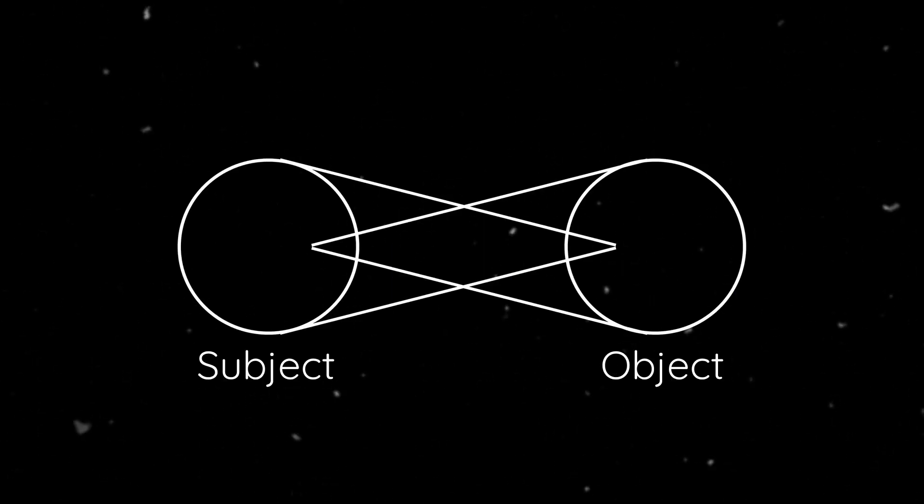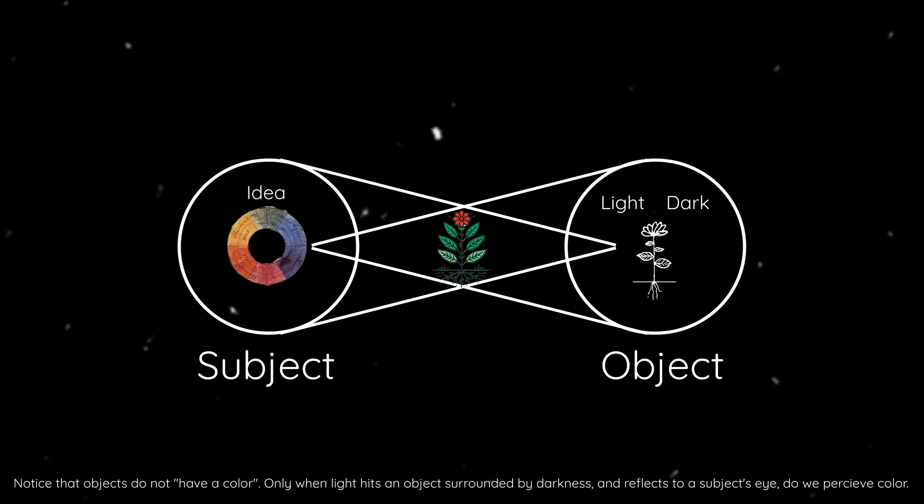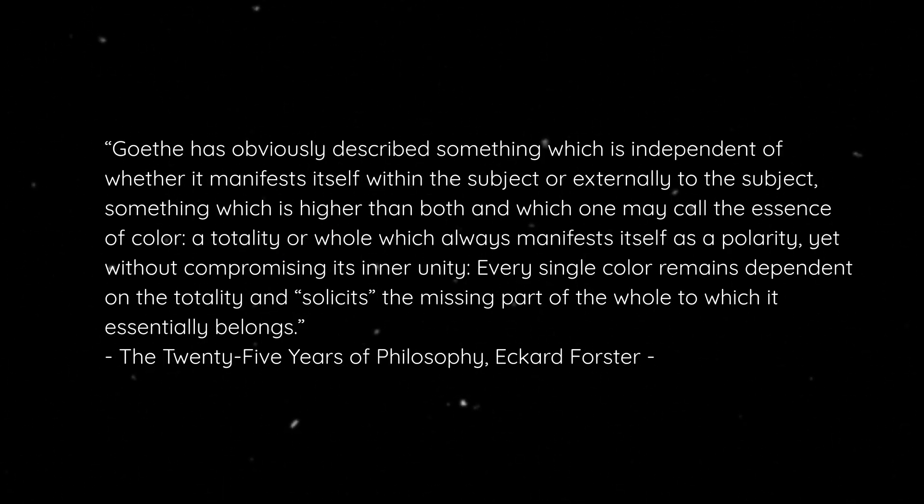Goethe has shown, however, that we do in fact have intellectual intuition. That is, that we bear in our minds the idea or essence. That when seeing the part, we intuit the whole and the other way around. Goethe has obviously described something which is independent of whether it manifests itself within the subject or externally to the subject. Something which is higher than both and which one may call the essence of color. A totality or whole which always manifests itself as a polarity, yet without compromising its inner unity. Every single color remains dependent on the totality and solicits the missing color of the whole to which it essentially belongs.